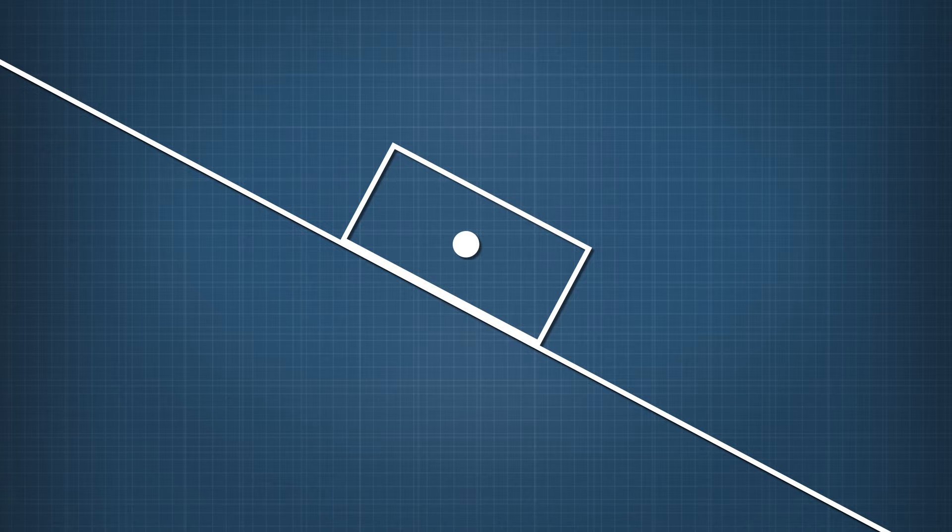Following our method, we first draw an outline of the block, and put a dot in the center of it. Now for the forces involved. We know gravity pulls the block down. We draw that arrow in first, and label it F sub G.